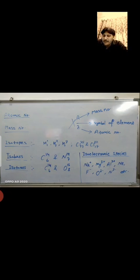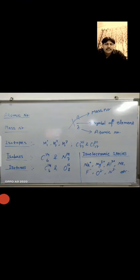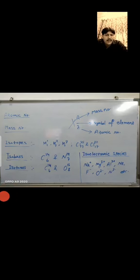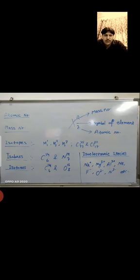Our next topic is isotopes, which you studied in class 9th. Isotopes are different atoms of the same element having the same atomic number but different mass numbers. For example, hydrogen: H-1-1, H-2-1, H-3-1, as well as Chlorine-35-17 and Chlorine-37-17. In these examples their atomic numbers are the same but their mass numbers are different — these are isotopes.